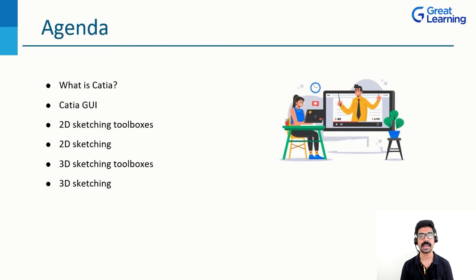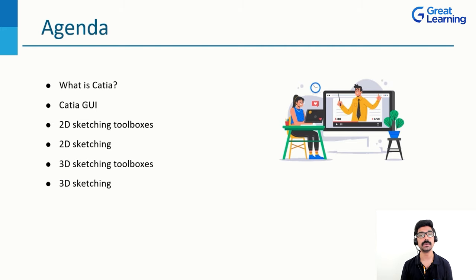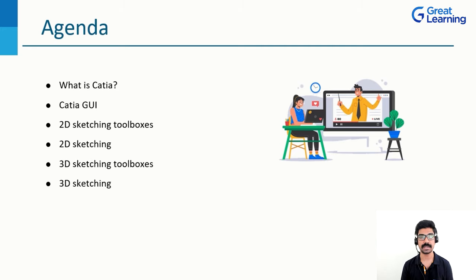We need to know what the software actually is: what is CATIA, how will we be able to design, what are the domains in which it is used, which industry is inculcating more of CATIA, and what are the job opportunities. After that, we'll move on to the software itself — understanding the graphical user interface, what options and tools are available, and getting familiarized with how the software looks when we open it.